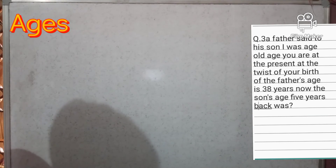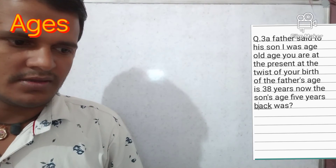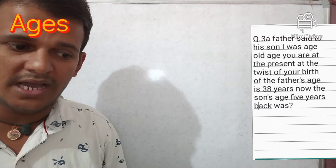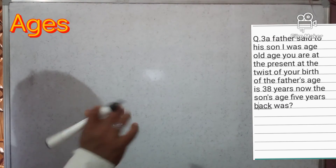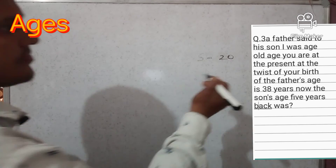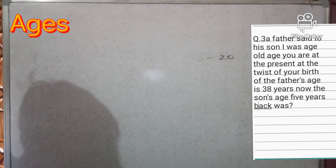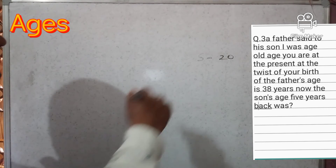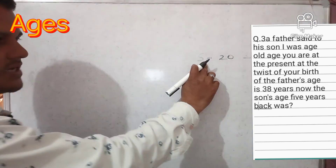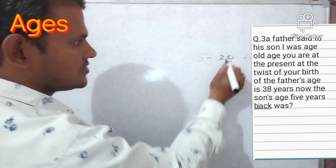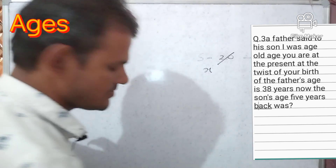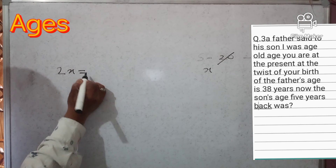Next question: A father said to his son, 'I was as old as you are now at the time of your birth.' If the father's age is 38 years now, what was the son's age five years back? Suppose the son's age now is 20 years — the father would be 40 at his birth time, because the father is twice as old. So if son is x, father is 2x. In the question, 2x equals 38.